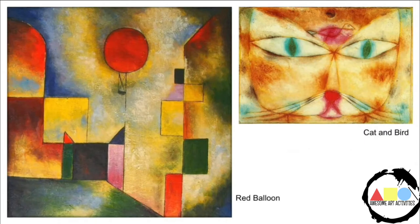Here are two abstract paintings by Paul Klee. The one on the left is called Red Balloon. The one on the right is called Cat and Bird.